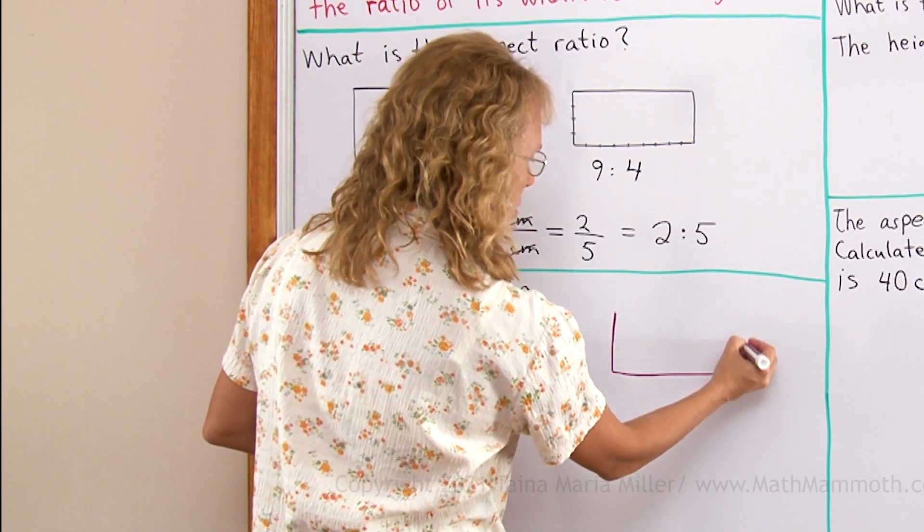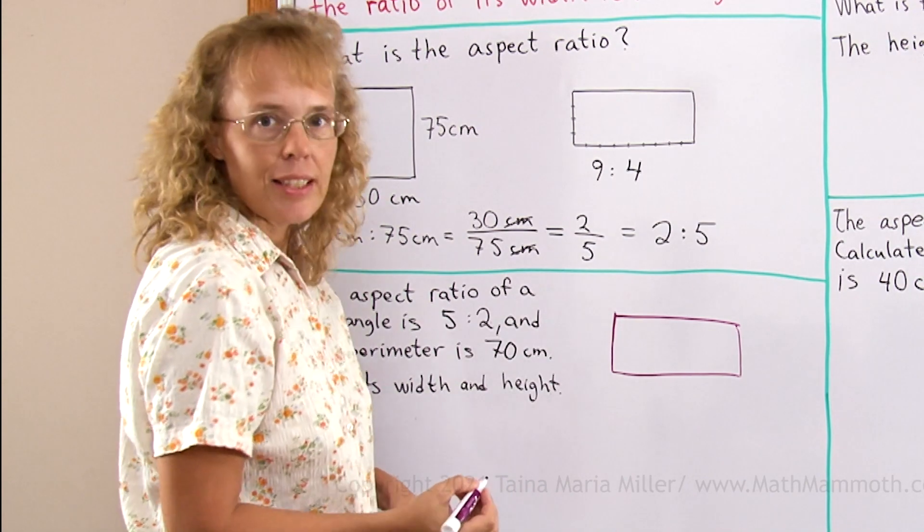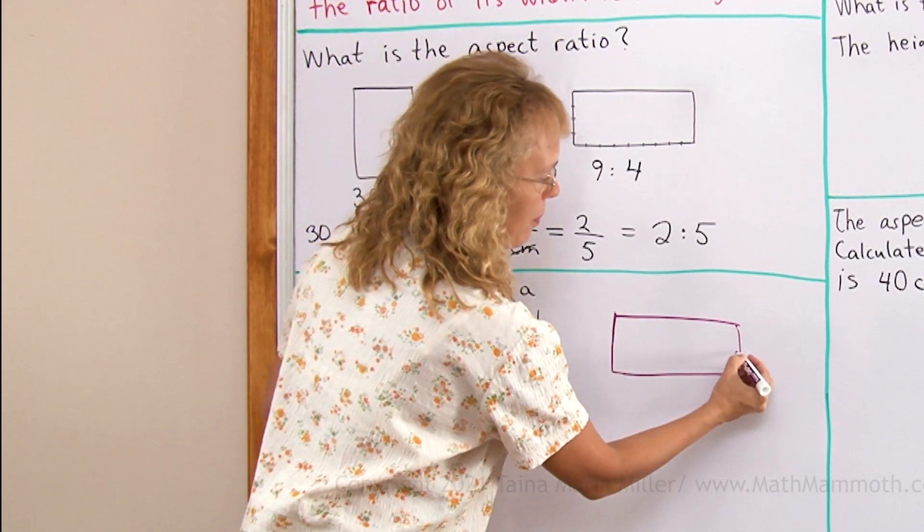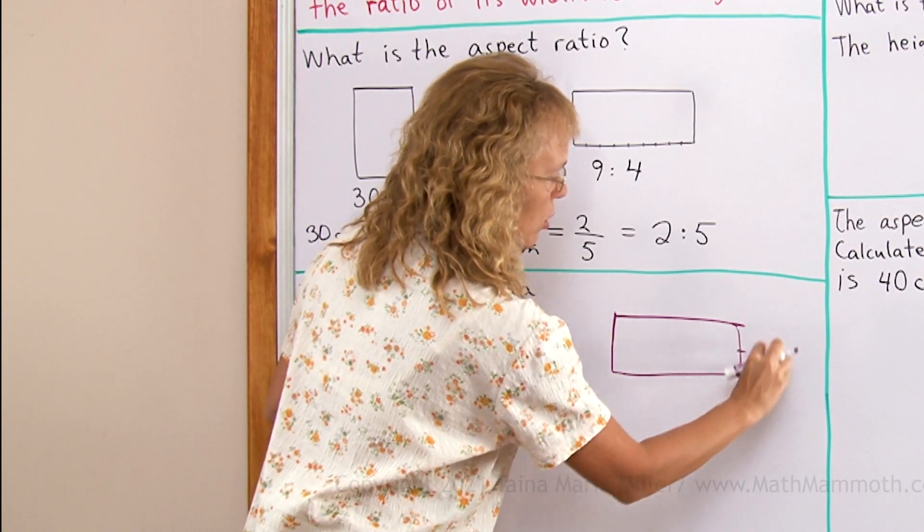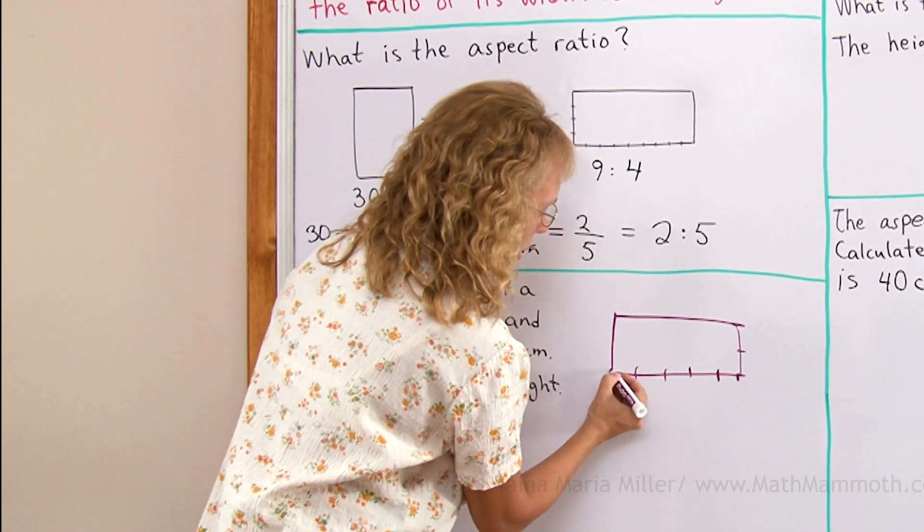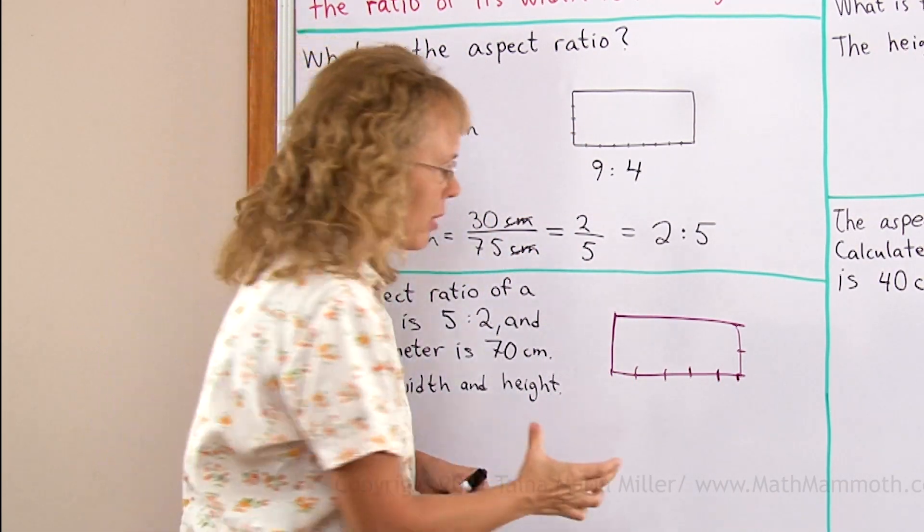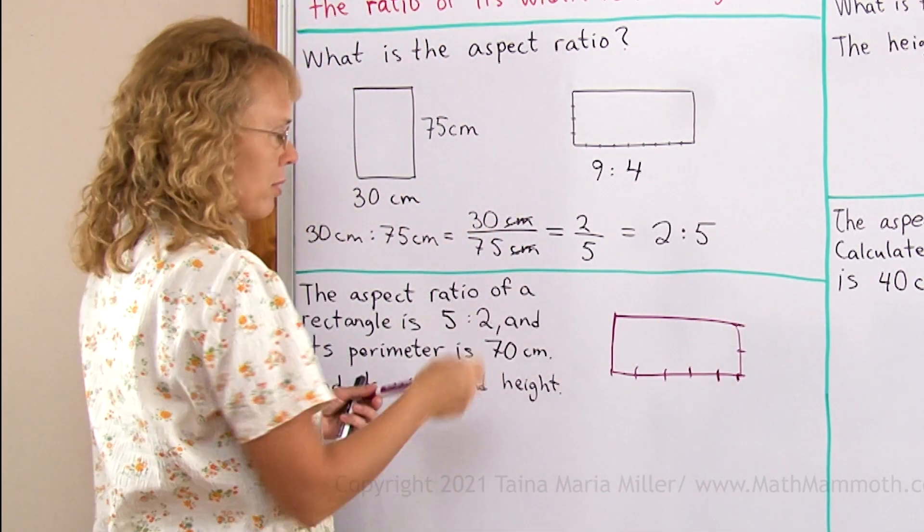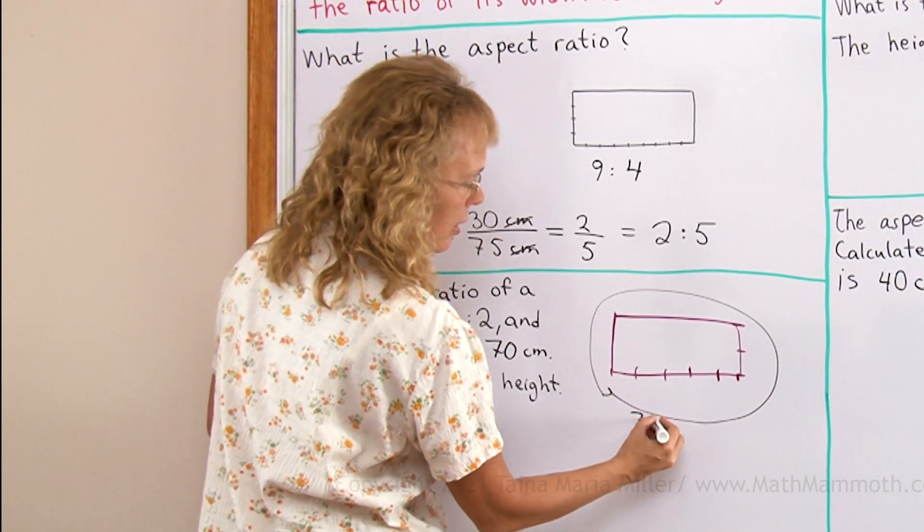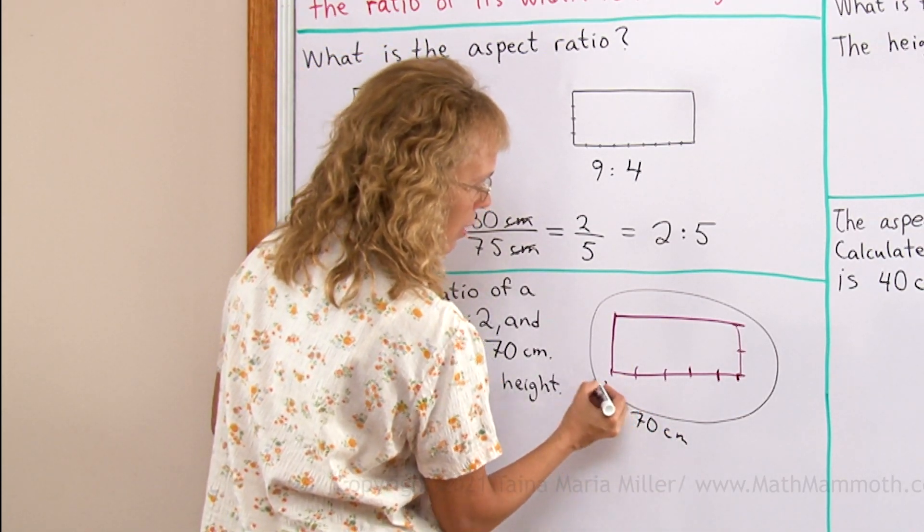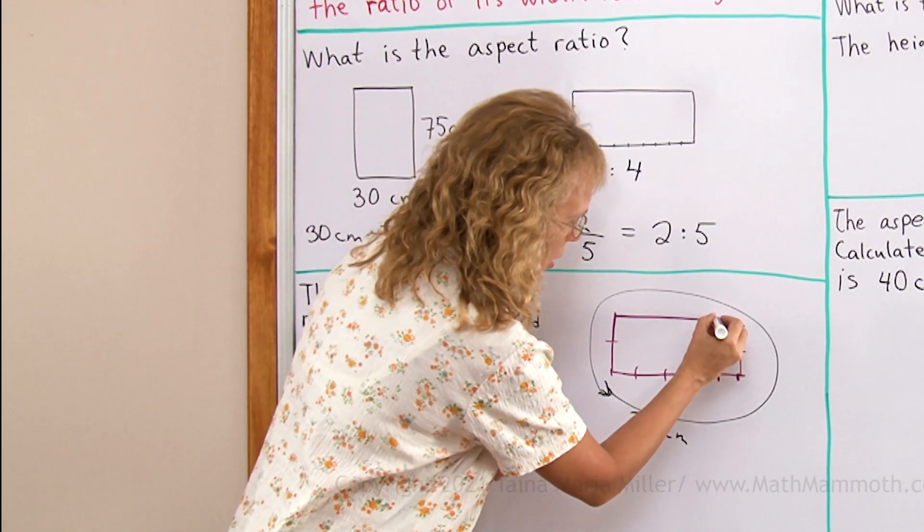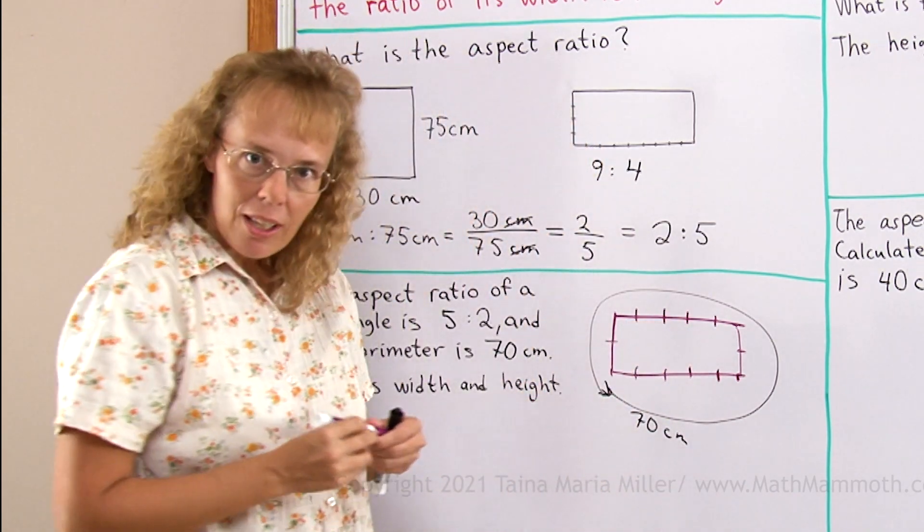5 and 2, something like that. Now let me mark here as if 5 units here and 2 units here. Like that, 2 units here and then 5 units here. So that gives me the aspect ratio now, 5 to 2. And it says that its perimeter is 70 centimeters. All the way around here is 70 centimeters. So let me continue and put these units, so to speak, all the way around the rectangle.